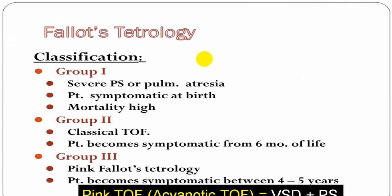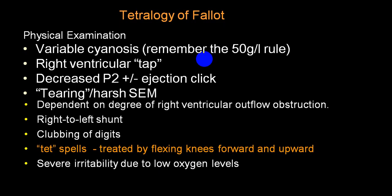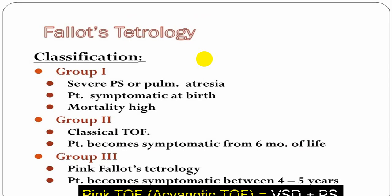Clinically, TOF can be divided into three groups: Group 1 — severe pulmonary stenosis or pulmonary atresia with very high mortality; Group 2 — symptomatic from six months of life; Group 3 — 'pink TOF' or acyanotic TOF, with very mild pulmonary stenosis and VSD, where less deoxygenated blood enters the left side, so the patient is largely asymptomatic and not cyanotic.